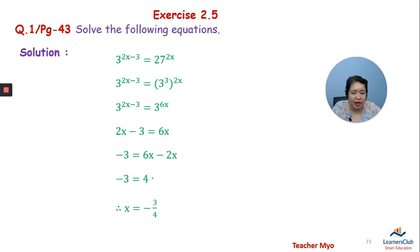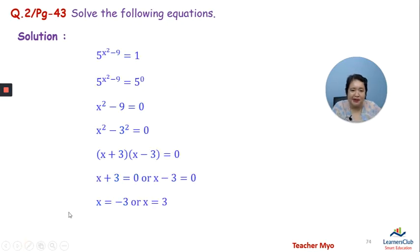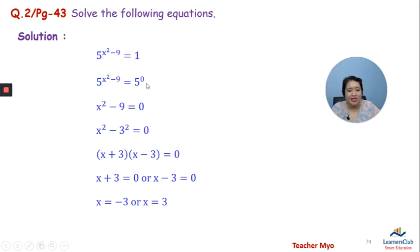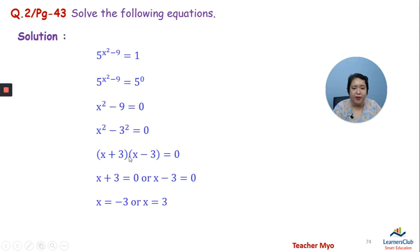From 2x minus 3 equals 6x, we get 6x minus 2x equals minus 3, so 4x equals minus 3. Rearranging, we arrive at a quadratic: 3 squared x plus 3x minus 3 equal to 0.